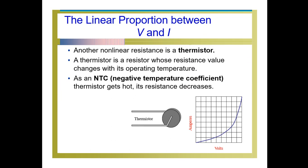Another non-linear resistance is a thermistor. A thermistor is a transducer device that maintains a negative temperature coefficient — whenever temperature increases, the resistance of the material decreases, and vice versa. This is exactly opposite to the tungsten filament. Because of this negative temperature coefficient, the output current does not follow the input voltage proportionally, so the VI characteristics are also non-linear. For non-linear characteristics, Ohm's law is not obeyed.